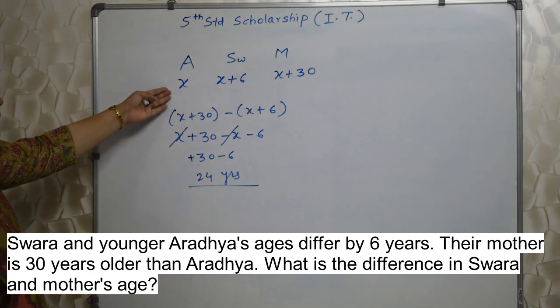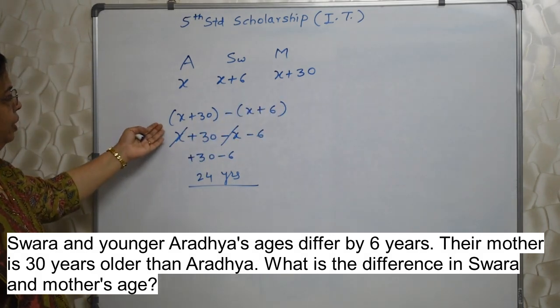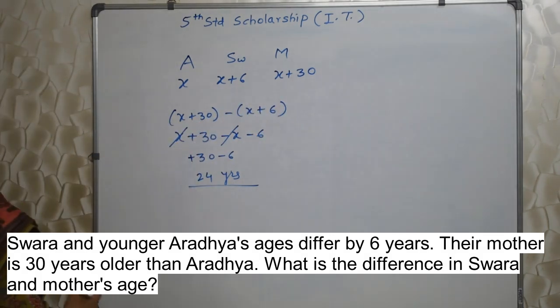Very easy. We have just assumed Aradhya is x, we found out these two, and what they have asked we have written here. Difference between mother and Swara is 24 years.